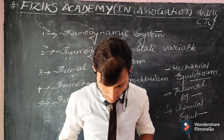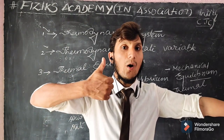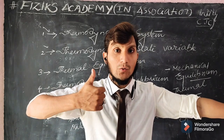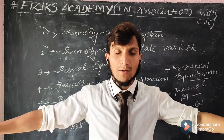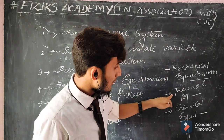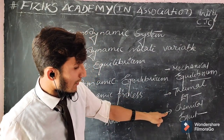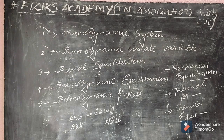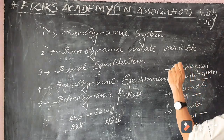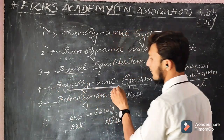For example, when I am standing, the downward gravity is exactly balanced by the upward normal force — so I am in mechanical equilibrium. Thermal equilibrium means two objects have the same temperature. Chemical equilibrium means the number of particles is the same in both objects. If a system is in all three — mechanical, thermal, and chemical equilibrium — only then is it in thermodynamic equilibrium.